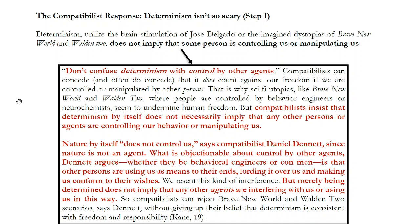But the universe, of course, isn't a person. The universe is just a set of physical causes that bring about events in an orderly fashion if determinism is true. Perhaps it would be different if God were controlling your actions — then there's some agent controlling them. But if we're just saying that nature has caused you to do certain things, that prior causes in the past caused what you're doing now, that's not like a person controlling you. It just means that the things you do have causes. As Cain explains: merely being determined does not imply that any other agents are interfering with us or using us in this way.